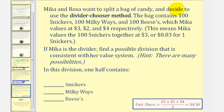Let's look at one more example. Mika and Rosa want to split a bag of candy using the divider-chooser method. The bag again contains one hundred Snickers, one hundred Milky Ways, and one hundred Reese's, which Mika values at three dollars, two dollars, and four dollars respectively. That means each Snicker is worth three cents, each Milky Way is worth two cents, and each Reese's is worth four cents. Mika's total value for all the candy is three plus two plus four dollars, or nine dollars. Since nine divided by two is four dollars and fifty cents, Mika's fair share would be worth four dollars and fifty cents.